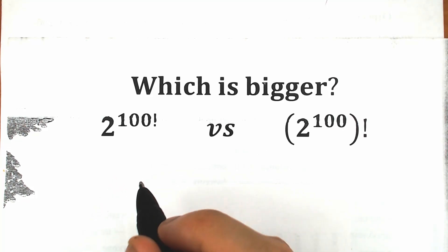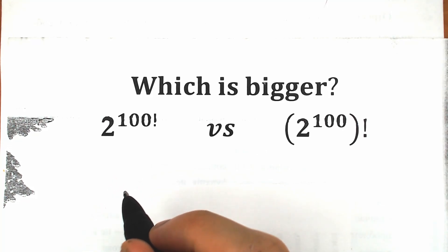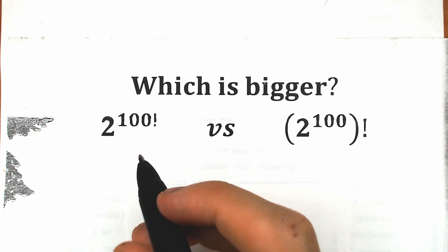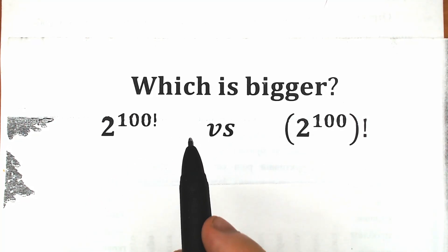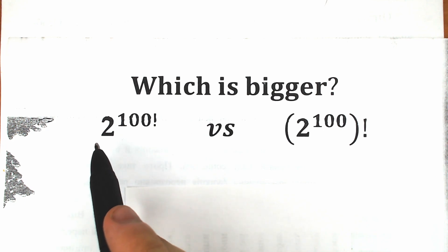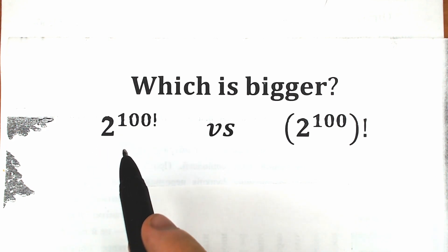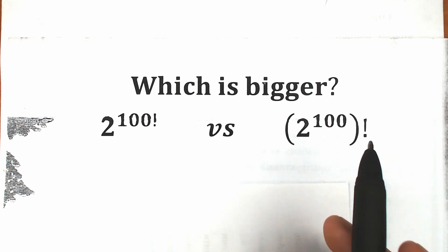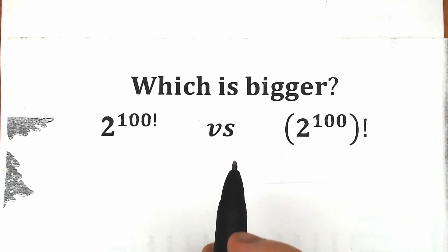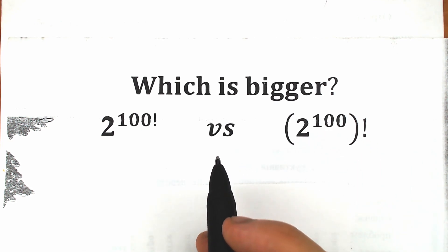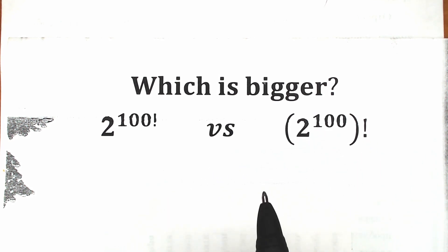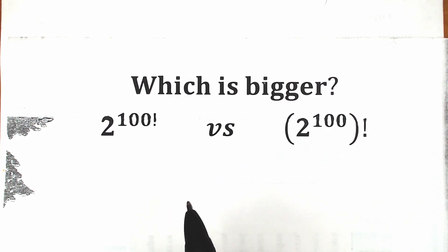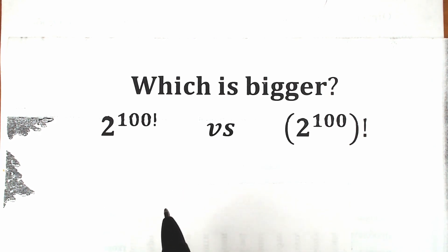Hello everyone, welcome back to my channel. I'm Asimatics and today we have a really interesting and relaxing challenge. Which one is bigger? On the left side we have 2 to the power 100 factorial, and on the right side we have 2 to the power 100, by factorial. What do you think? Write your thoughts down in the comment section. You can also pause the video and we will check your answers here in just one minute.